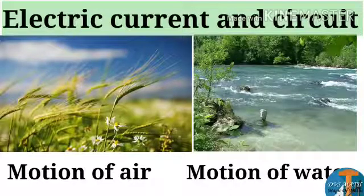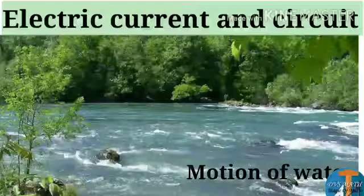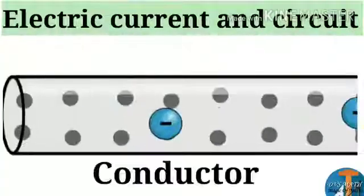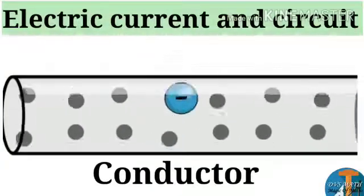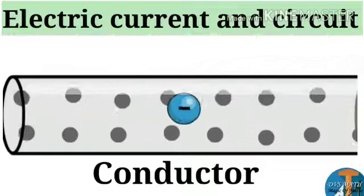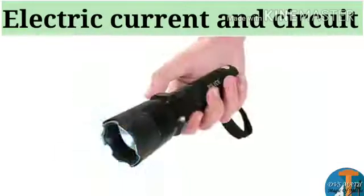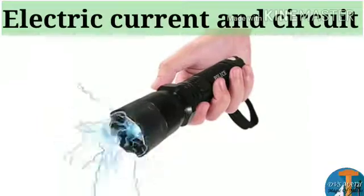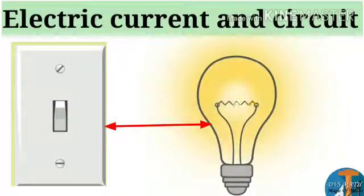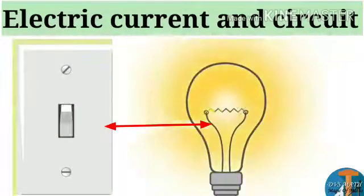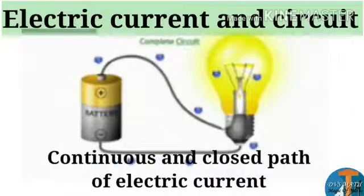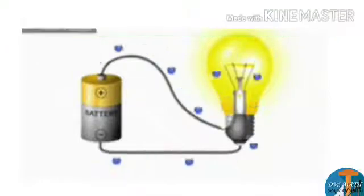You are familiar with air current and water current. We know the flowing of water constitutes current in rivers. Similarly, if the current charge flows through a conductor, we say that there is an electric current in the conductor. For example, in a torch, the cells provide flow of charges or electric current through the torch bulb to glow.